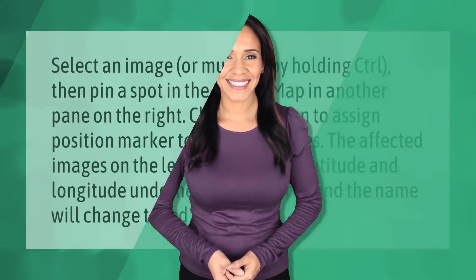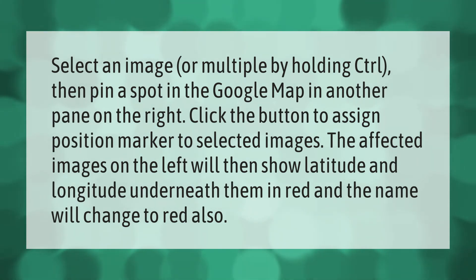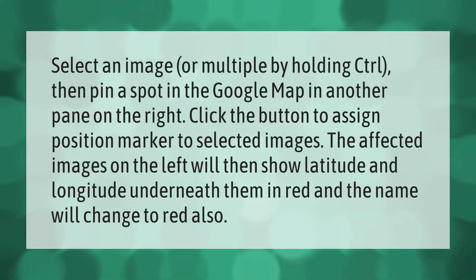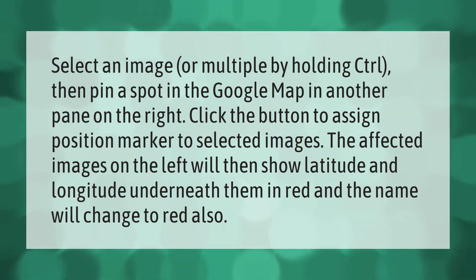Select an image, or multiple images by holding Control, then pin a spot in the Google Map in another pane on the right. Click the button to assign the position marker to selected images. The affected images on the left will then show latitude and longitude underneath them in red, and the name will change to red also.